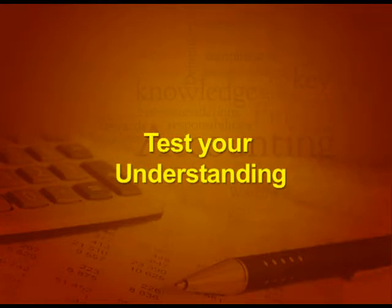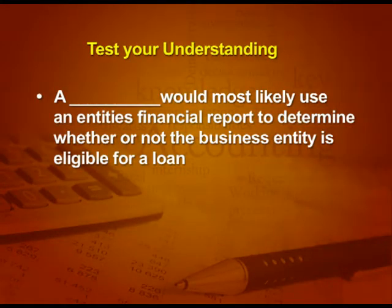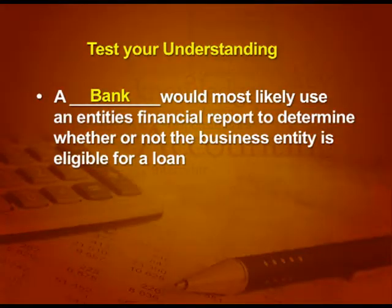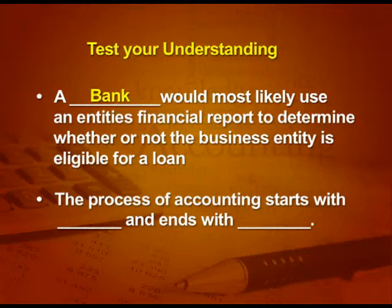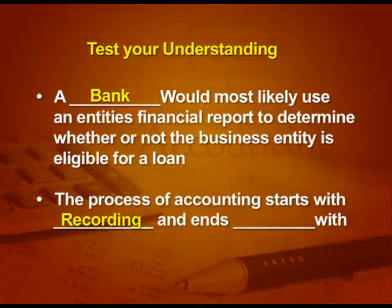Now let us test your understanding. Fill in the blank: 'A dash would most likely use an entity's financial report to determine whether or not the business entity is eligible for a loan.' Who uses the report for a loan? Yes, a bank uses the reports for a loan. Next: the process of accounting starts with what and ends with what? It starts with recording and ends with communication of the report — not making of the accounts, but with communication. In the last step, you communicate the reports to the persons.